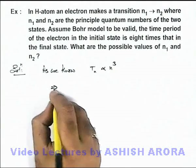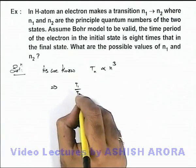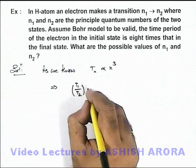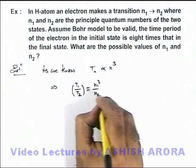So this implies from state 1 to 2, if the time periods are T1 and T2, then the ratio can be given as n1 cubed by n2 cubed.